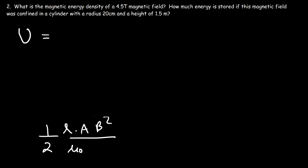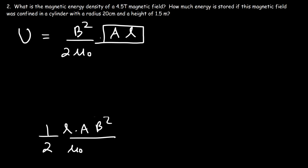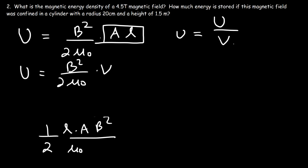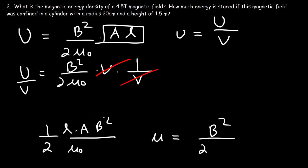The potential energy stored in a magnetic field is B squared divided by 2 mu zero, times A times L. Since area times length represents volume, the potential energy equals B squared over 2 mu zero times the volume. The energy density is energy divided by volume, so dividing both sides by V, the magnetic energy density equals B squared divided by 2 mu zero.